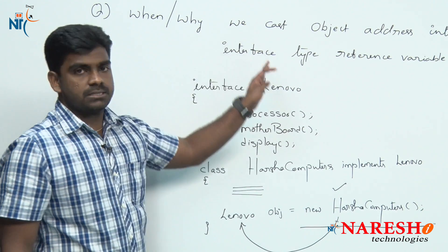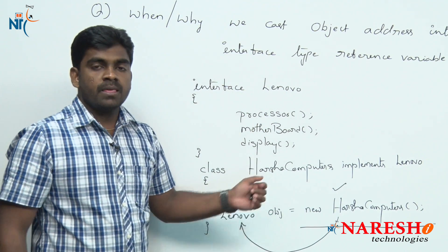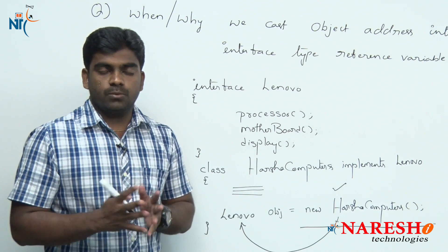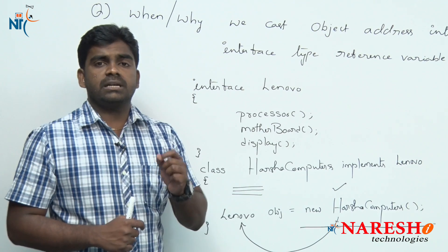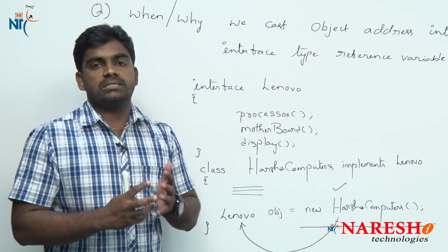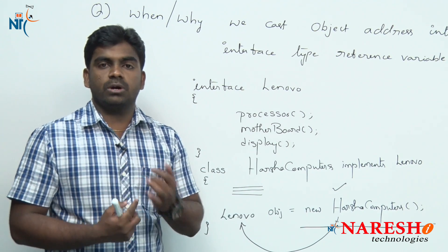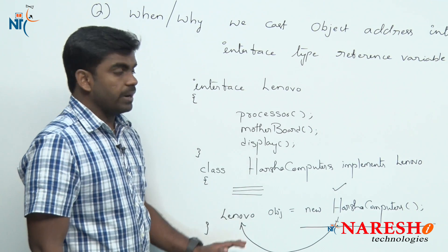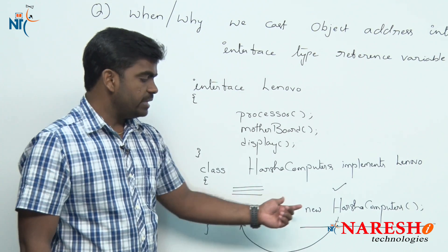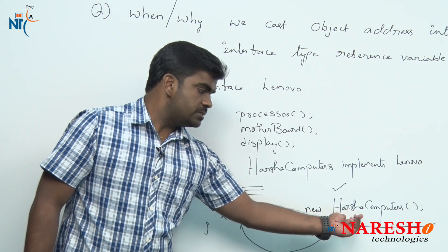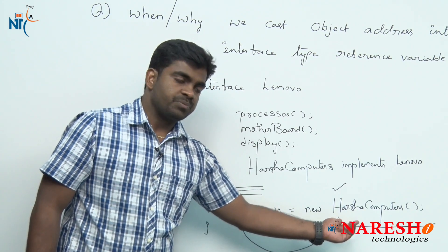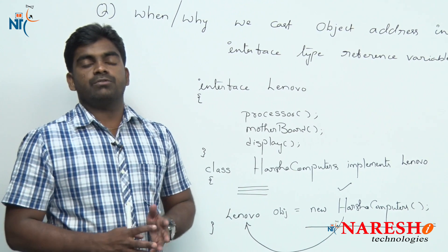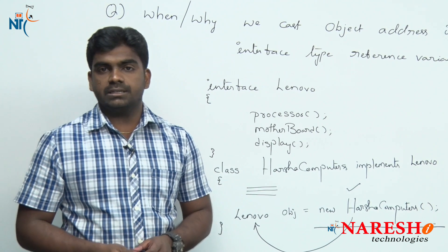When we cast an object address into an interface type reference variable, this is actually object upcasting. Object upcasting is why it is allowed — internally, object upcasting is implicit. We will discuss briefly what upcasting and downcasting are in the coming FAQs. So that is the reason why it is allowed: when we instantiate any object and provide a reference of interface type. Hope you understood well. For more videos, please subscribe to Nourish IT channel.